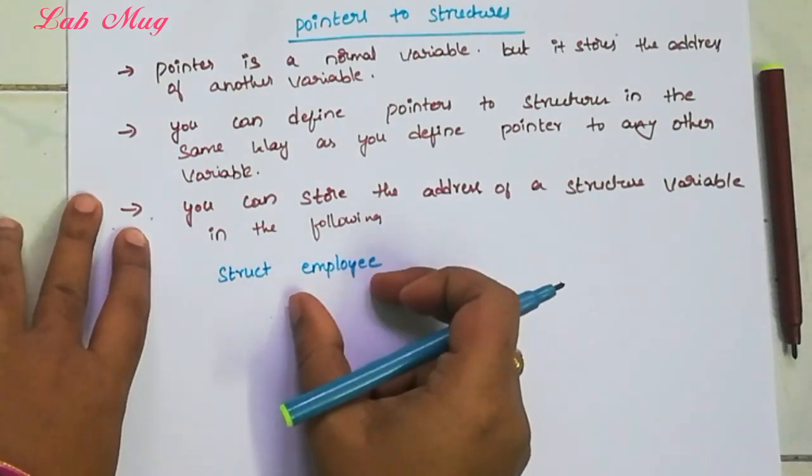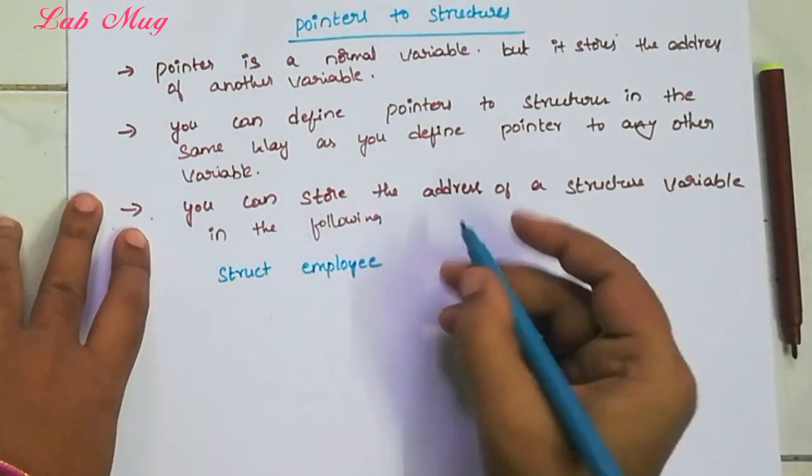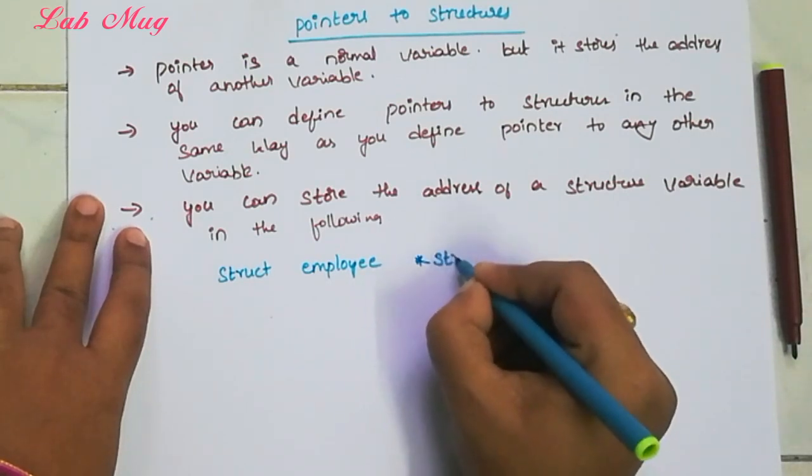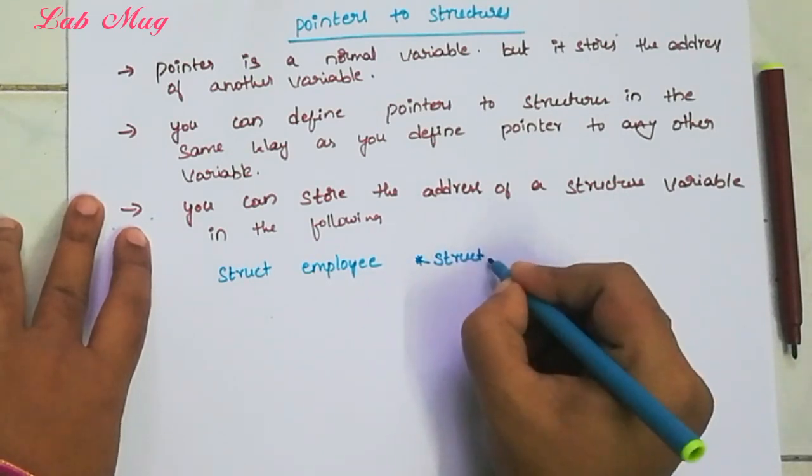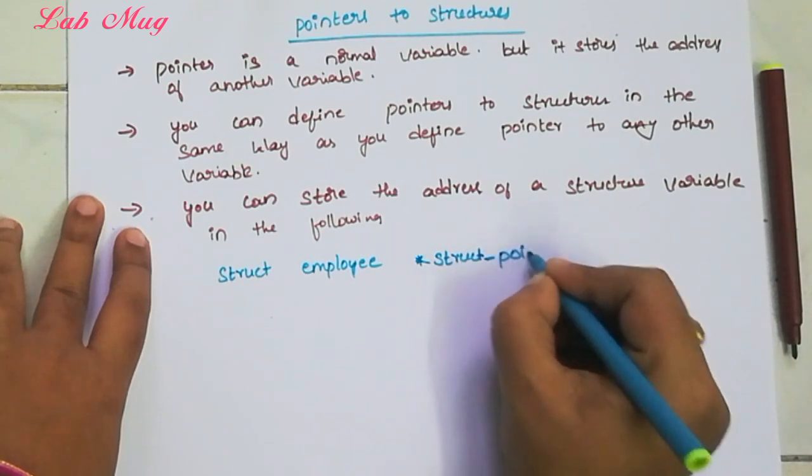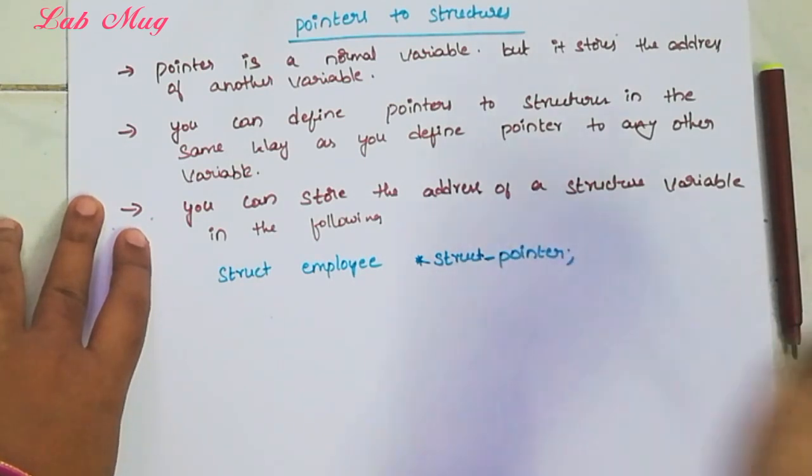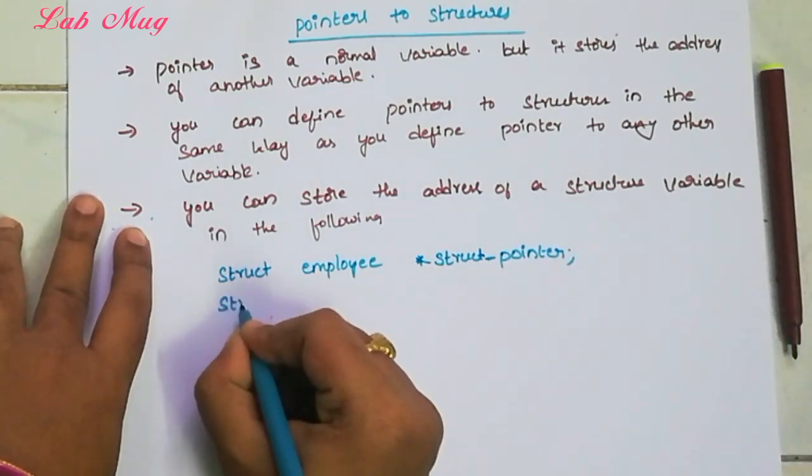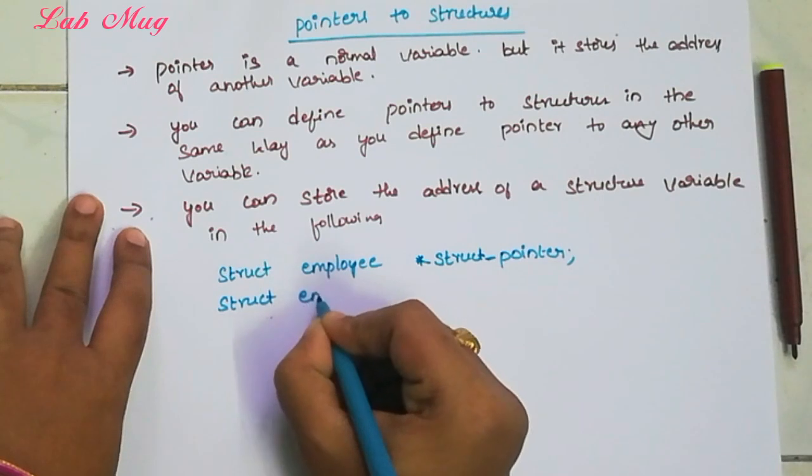So struct employee, I'm declaring a pointer using asterisk. Struct underscore pointer. So employee - I'm mentioning it as a pointer. For example, struct employee, asterisk emp_pointer.